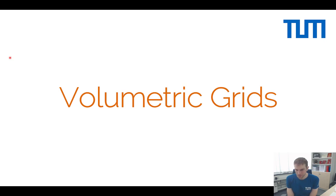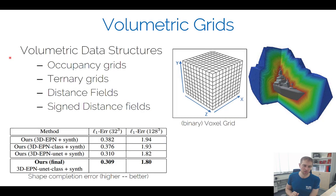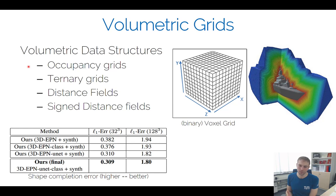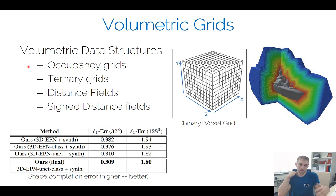Now let's talk about volumetric grids and how to feed data into the network. A voxel is the same as a pixel but in 3D — we have a 3D array and for every spatial location one associated cell. The simplest version is the occupancy grid: for every voxel where there's a surface point, you say it's occupied (1), otherwise empty (0). You can have an occupancy grid that only models the surface, or a solid voxelization where everything inside the object is filled. Most of the time when scanning, we only model the hull — not the interior — since 3D scanners can only scan the surface.